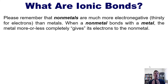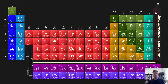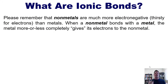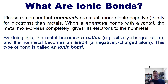Non-metals are much more electronegative — that is, they're thirstier for electrons than metals — because non-metals are located further to the right and up on the periodic table. So when a non-metal bonds with a metal, the metal more or less completely gives its electrons to the non-metal. By doing this, the metal becomes a cation, which is a positively charged atom, while the non-metal becomes an anion, which is a negatively charged atom. This type of bond is called an ionic bond.